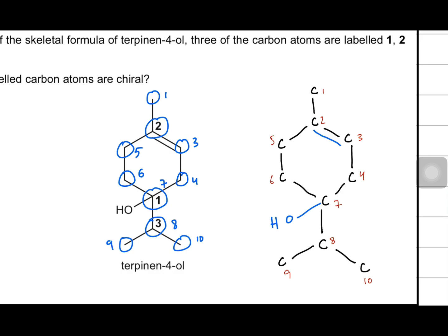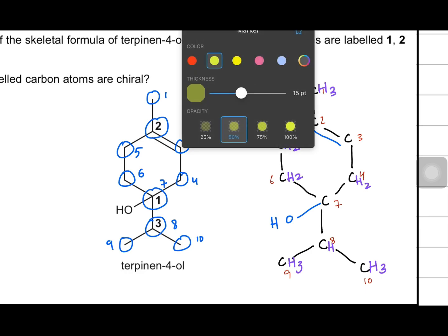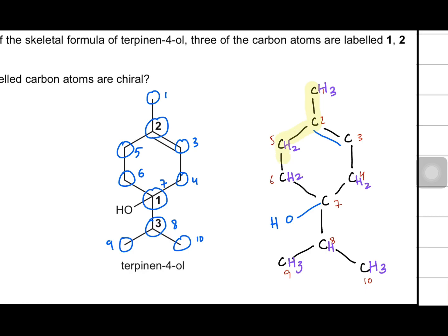Carbon one has three hydrogens. Carbon two has already made four bonds, so nothing there. Carbon three already has four bonds. Carbon four has two more hydrogens. Carbon five also has two hydrogens. Carbon six also has two hydrogens. Carbon seven has all bonds complete, so no hydrogen. Carbon eight has one more hydrogen. Carbon nine is H3, carbon ten is H3. This is the whole structure — this is your main carbon chain including the double bond.